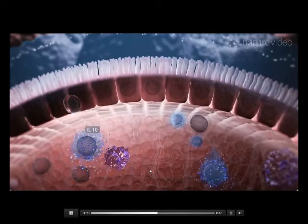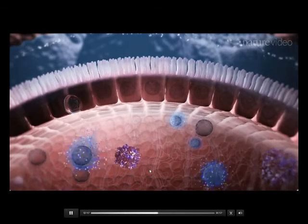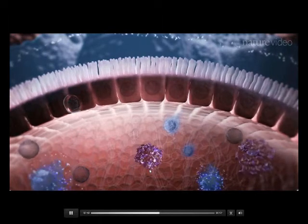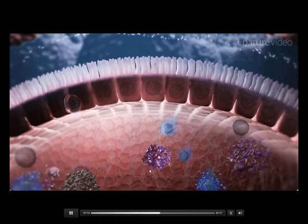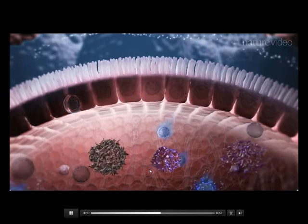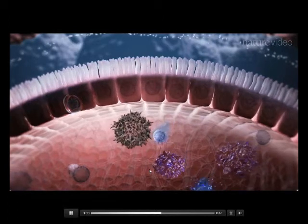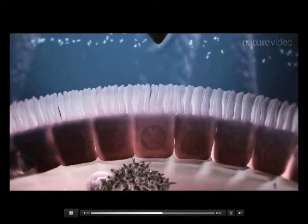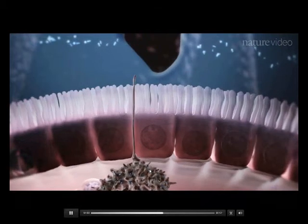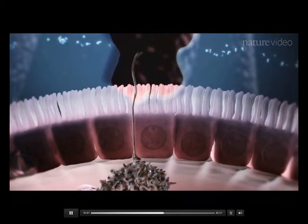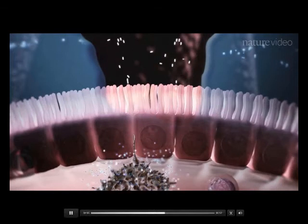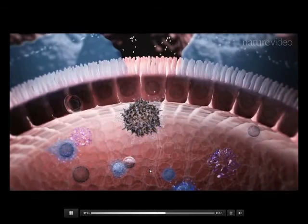These Tregs migrate to the lamina propria of the villi via the lymphatics. Here, the Tregs secrete a molecule called IL-10, which exerts a suppressive action on immune cells within the lamina propria and upon the epithelial layer itself. IL-10 is critically important in maintaining immune homeostasis and preventing unnecessary inflammation. However, a breakdown in this process results in gut pathology, and when this occurs over a prolonged period in an uncontrolled manner, it can lead to inflammatory bowel disease.